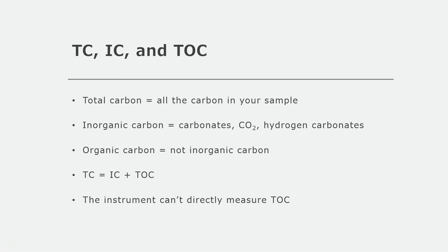Now let's talk about discerning between TC, IC, and TOC. TC means total carbon — it's all of the carbon in your sample. IC is inorganic carbon, which is all the carbonates, hydrogen carbonates, and carbon dioxide in your sample. TOC is total organic carbon, which is basically anything that isn't inorganic carbon. The main equation is TC equals IC plus TOC. This is useful because the instrument can't actually directly measure TOC. The instrument can measure total carbon by combusting the whole sample, and it can measure inorganic carbon by acidifying the sample and sparging out the CO2. It can then subtract the inorganic carbon from the total carbon to give you a result for TOC, but it's not actually directly measuring total organic carbon. Measuring TOC can be tedious because you have to measure both TC and IC, which means two calibration curves, and the run takes longer.